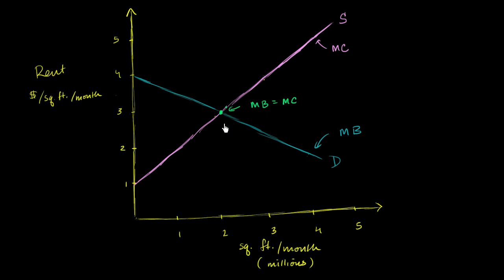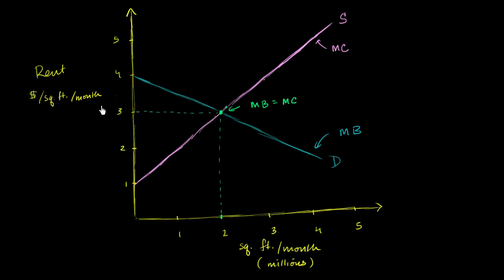So we reach an equilibrium point at 2 million square feet per month on the market, at a price of $3 per square foot per month.